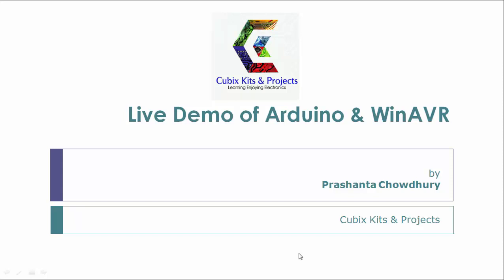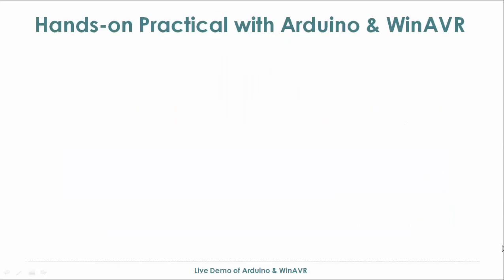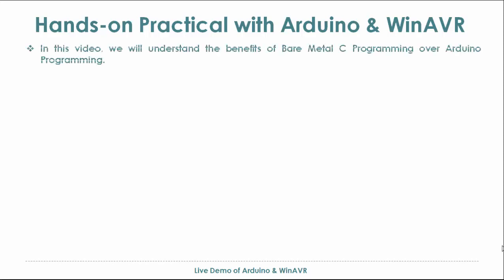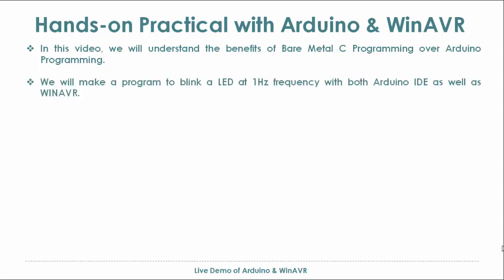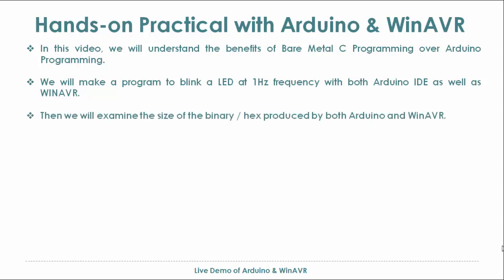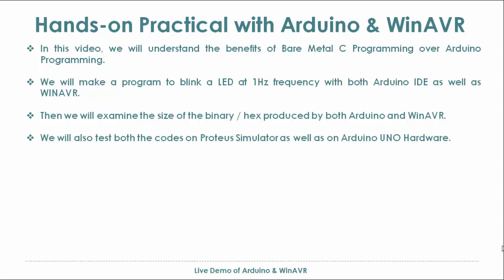Welcome to this live demo of Arduino and WinAVR. In this video we will have a hands-on practical with Arduino and WinAVR and understand the benefits of bare metal C programming over Arduino programming. We will make a program to blink an LED at 1 Hz frequency with both Arduino IDE and WinAVR, examine the size of the binary or hex file produced by both, and test the codes on Proteus simulator as well as on Arduino Uno hardware.